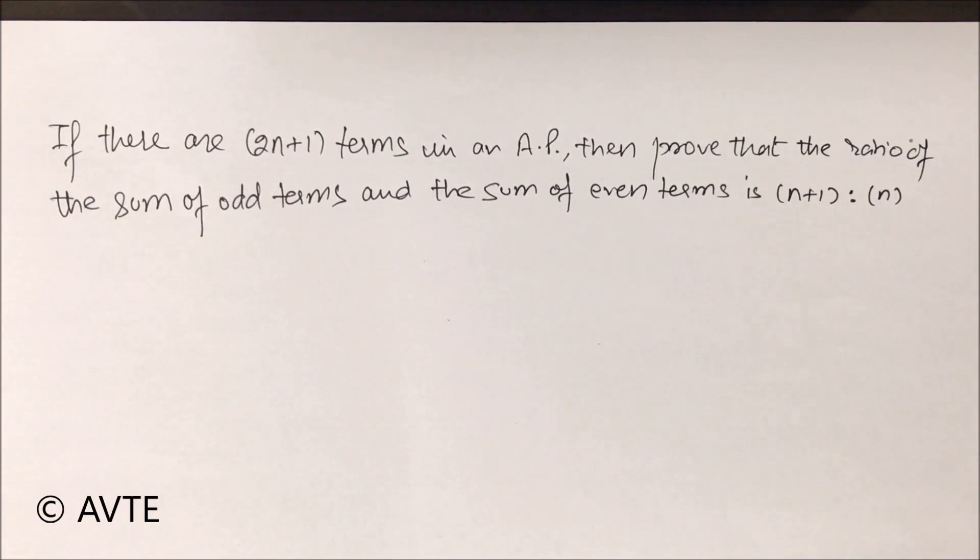If there are 2n plus 1 terms in an AP, then prove that the ratio of the sum of odd terms and the sum of even terms is n plus 1 is to n.